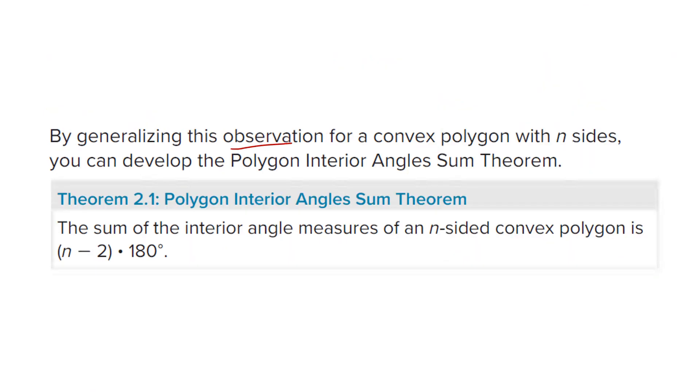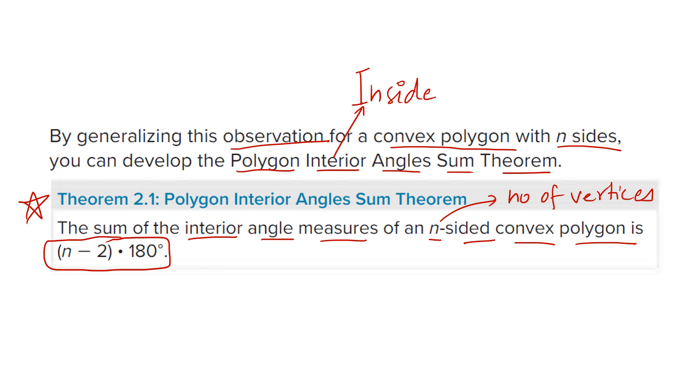So by generalizing the observation that you saw for the convex polygon with n sides, we can develop the theorem called polygon interior angle sum theorem. Very important. Interior means inside. So if the angles are inside the polygon, it is polygon interior angles theorem, which we are going to apply. And if it is outside, you will apply polygon exterior angle sum theorem. So the sum of the interior angles measure of an n-sided convex polygon is n minus 2 multiplied with 180 degrees. This is the formula. So always remember, you reduce by 2 and you multiply by 180.